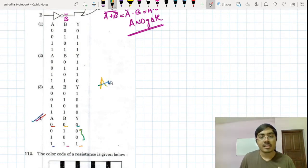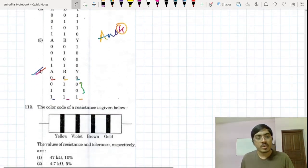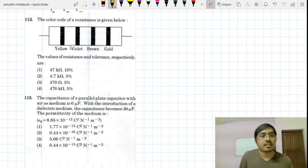Question number 112 is from the topic of current electricity. They have given a very simple question on color coding of resistors and grading of resistors. This is a very simple question, and during the examination time when you get this, you can think about BB Roy his wife who was very good and the gold silver necklace that she wore.